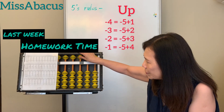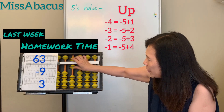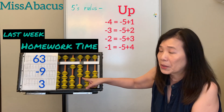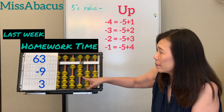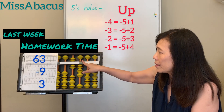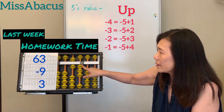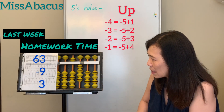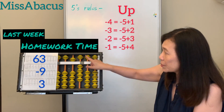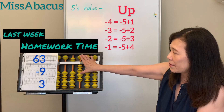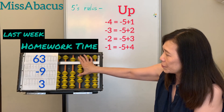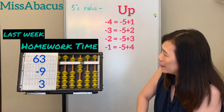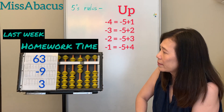Number 32: 63 minus 9. Three not enough for 9 — take away 10, plus 1. Then plus 3: use the 5's rule — down right on 2 for the 3. Answer: 57.